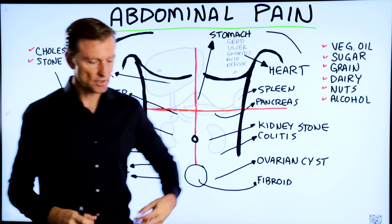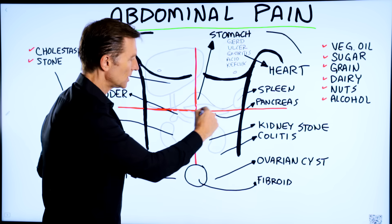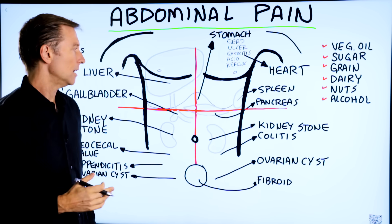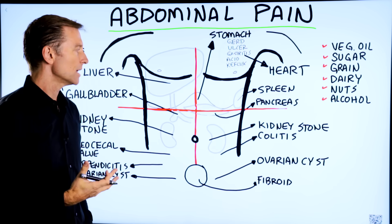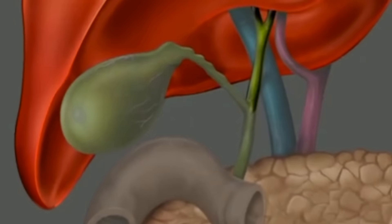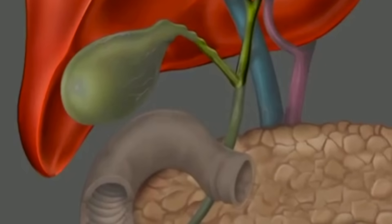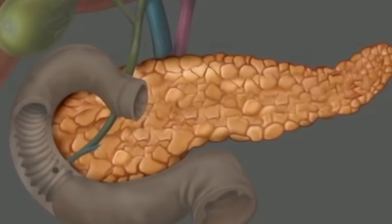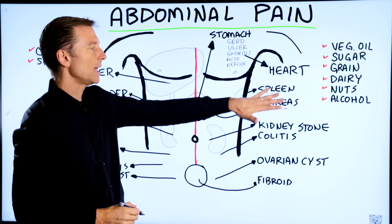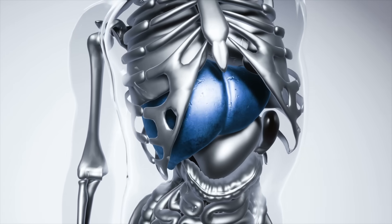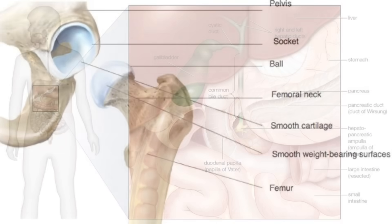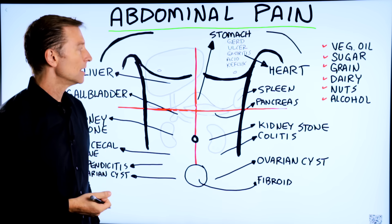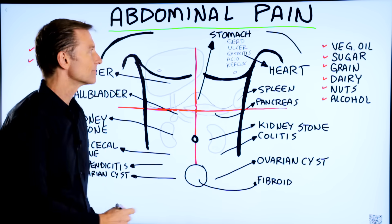Discomfort underneath the left rib cage, which could extend a little lower, is usually inflammation of the pancreas. The number one cause of pancreatitis is a blocked duct — a little tube from the liver that releases bile. Sometimes it forms sludge or a stone, backing up and causing pressure and inflammation into the pancreas. One of the most common things that irritates the pancreas and the liver is vegetable oils.